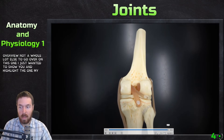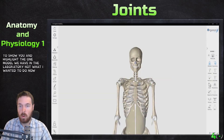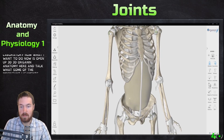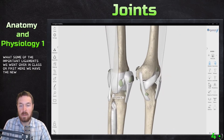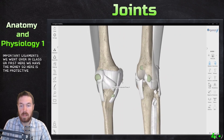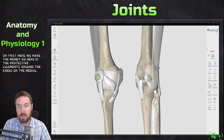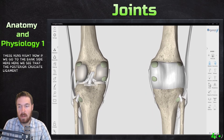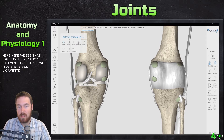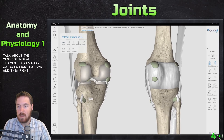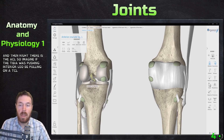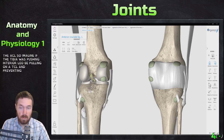Now opening up 3D Organon Anatomy to look at some important ligaments covered in class. Here at the knee we see the protective ligaments, including the medial collateral ligament. Going to the back side we see the posterior cruciate ligament. Hiding the meniscofemoral ligament, we can then see the ACL. Imagine the tibia pushing anteriorly — it would pull on that ACL and prevent hyperextension of the knee.